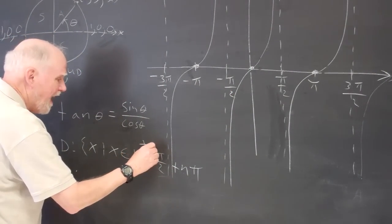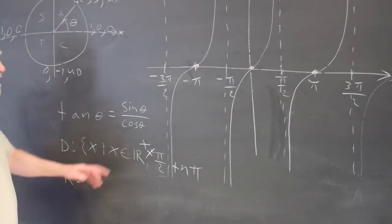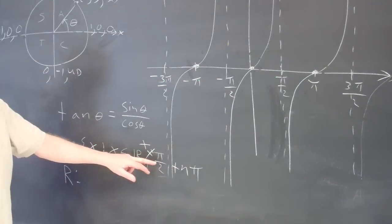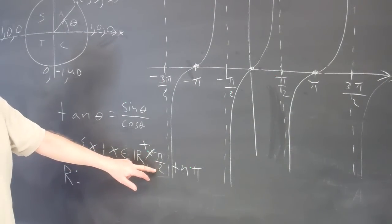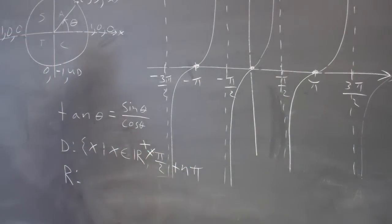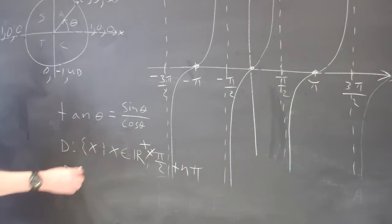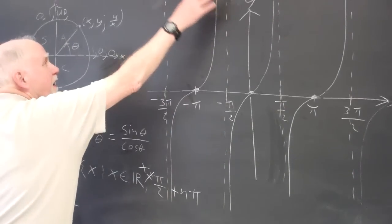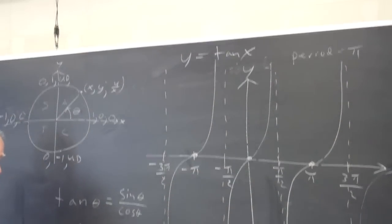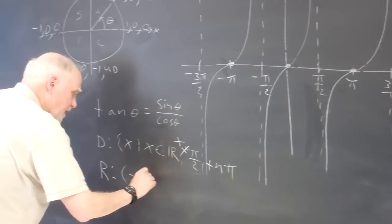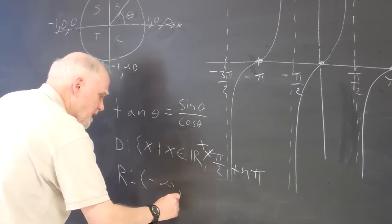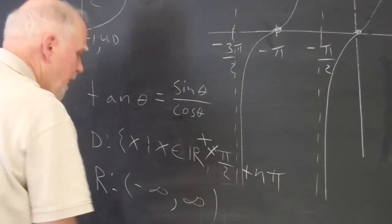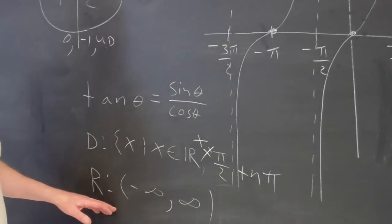x cannot equal pi over two plus n times pi. The range goes down to negative infinity and up to positive infinity, so the range is negative infinity to positive infinity.